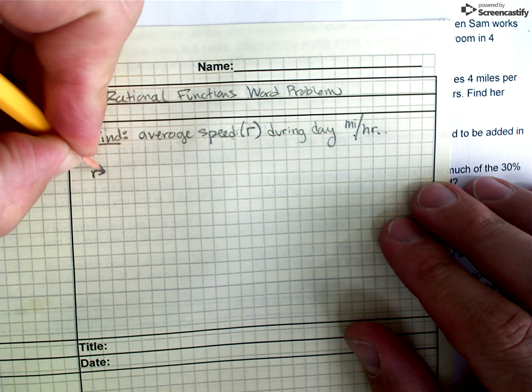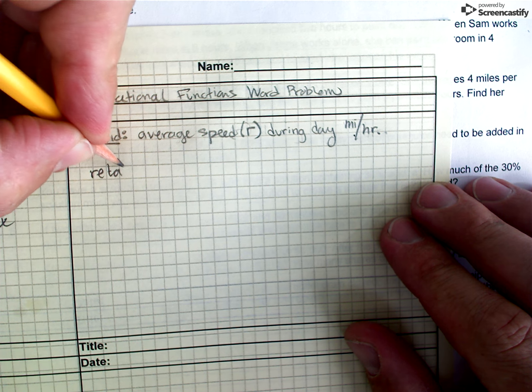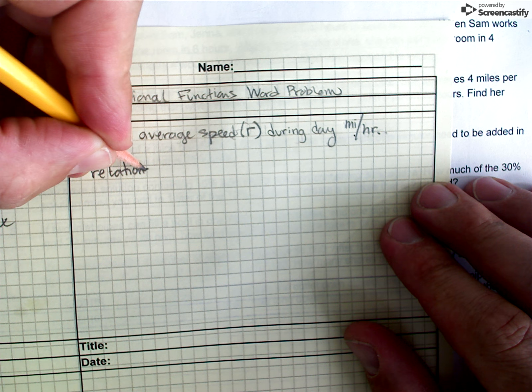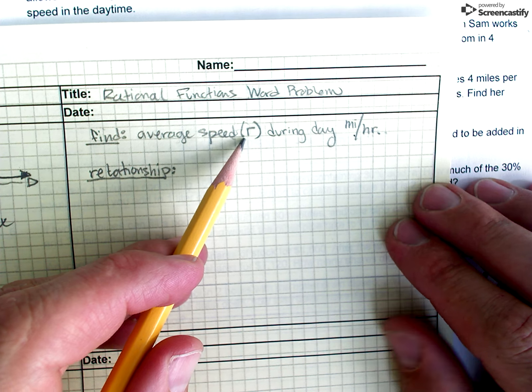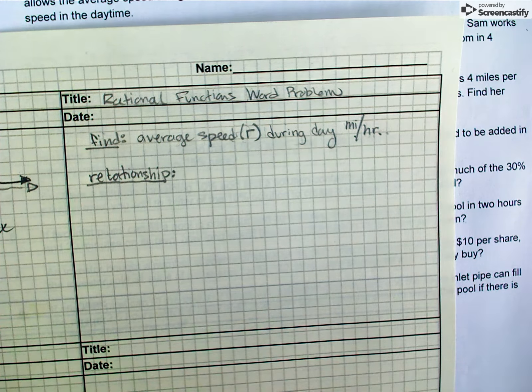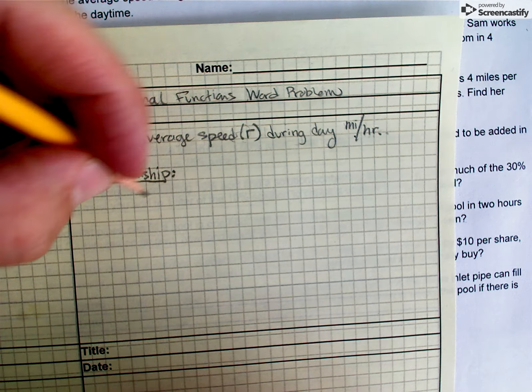Now, the next thing I want to think about is the relationship. The relationship between the thing I'm looking for, R in this case, the average speed during the day, and all the other things that are in this problem.